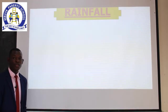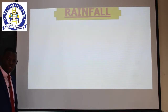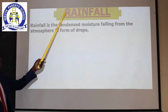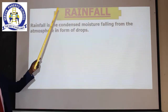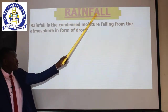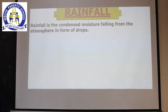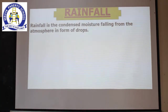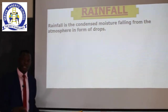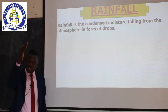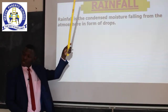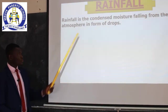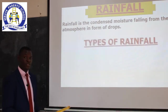You can get your book and keep with me because there are questions I will be asking. The word is rainfall — R-A-I-N-F-A-L-L. Rainfall is the condensed moisture falling from the atmosphere in the form of drops. What you see falling from the atmosphere is rainfall, and that process of rain coming from the atmosphere is called precipitation.